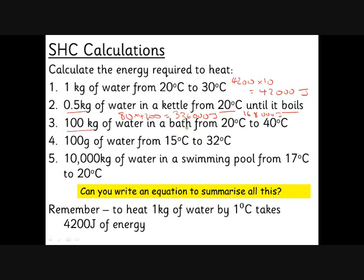If I want to have a bath with 100 kilograms of water heated from 20 degrees C to 40 degrees C, that's 4,200 times 20 degrees C hotter times 100 kilograms, which comes to 8,400,000 joules. These numbers seem ridiculously high, but a joule is a very small amount of energy, so it does take a lot of joules to do a relatively straightforward job.